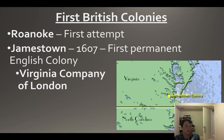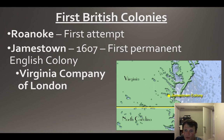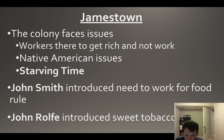Moving on to Jamestown - Jamestown happens in 1607, you should be familiar with that. It is the first permanent English colony, and that is really important - hint hint, wink wink, that's going to show up on your test. It is founded by a joint stock company where people are trying to make money - it's economic.